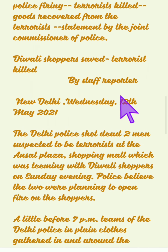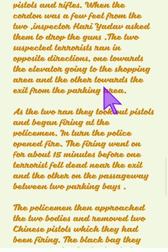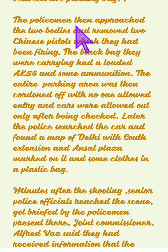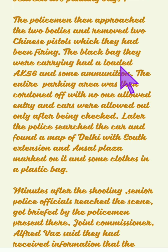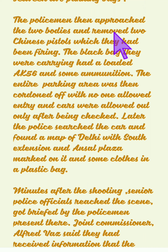The fifth point was goods recovered from the terrorists: 'The policemen approached the two bodies and removed two Chinese pistols which they had been firing. The black bag they were carrying had a loaded AK-56 and other ammunition. The entire parking area was cordoned off, with no one allowed entry and cars checked before being allowed through. Later, police searched the car and found a map of Delhi with South Extension and Ansel Plaza marked on it, and some clothes in a plastic bag.'